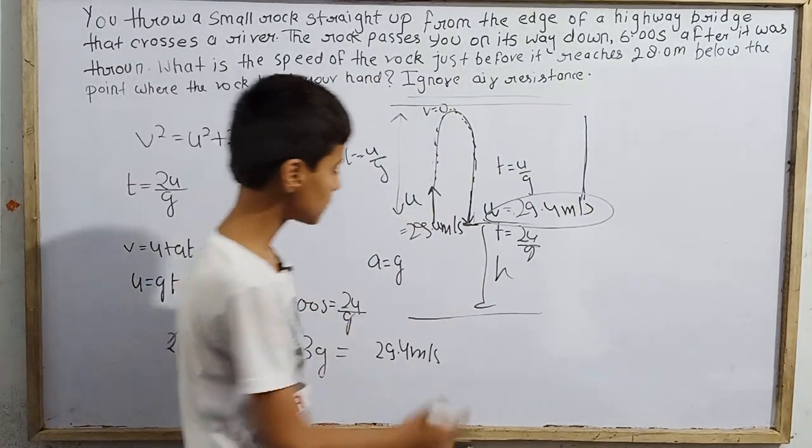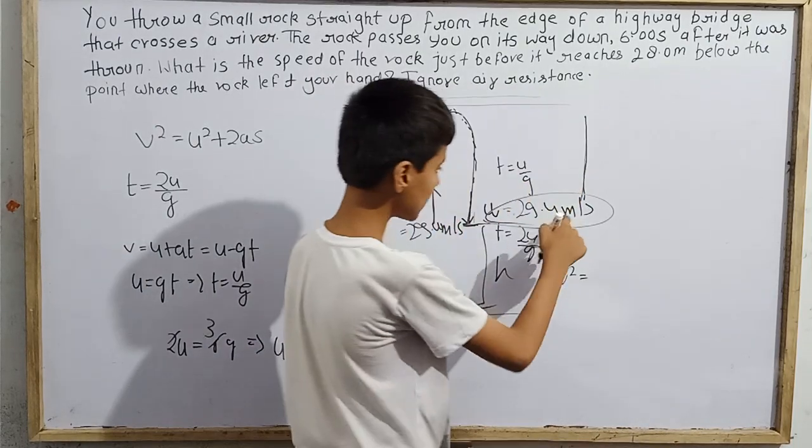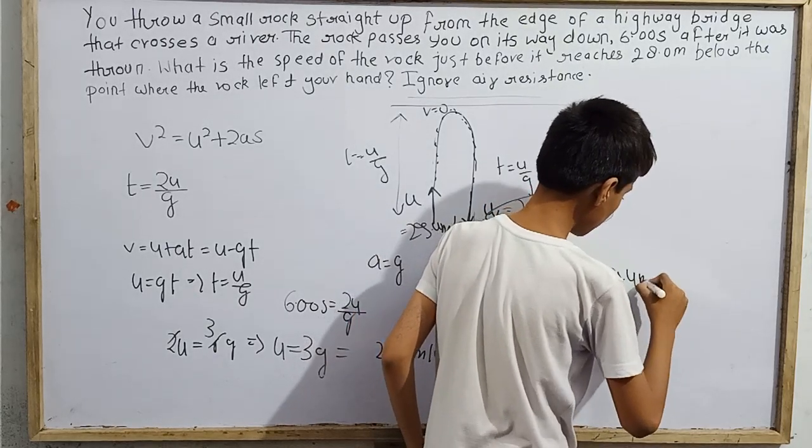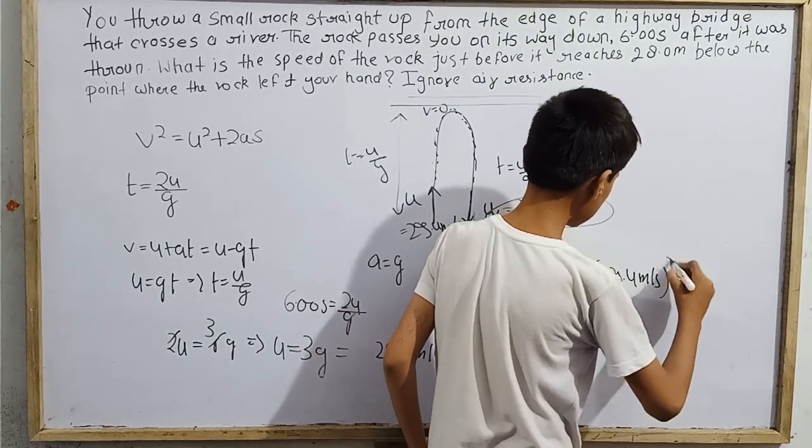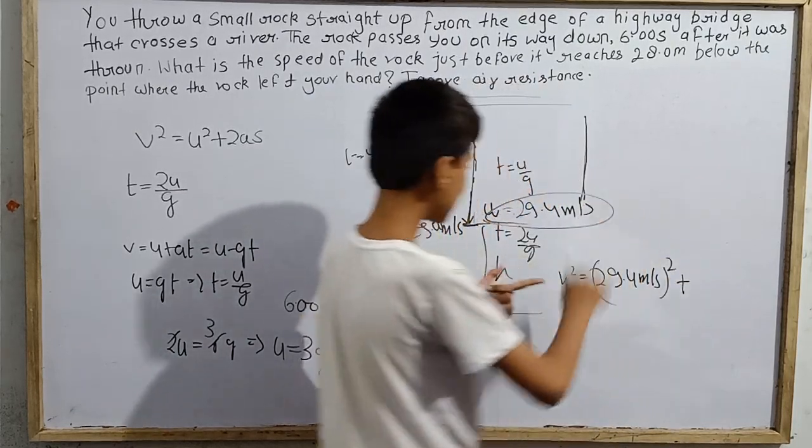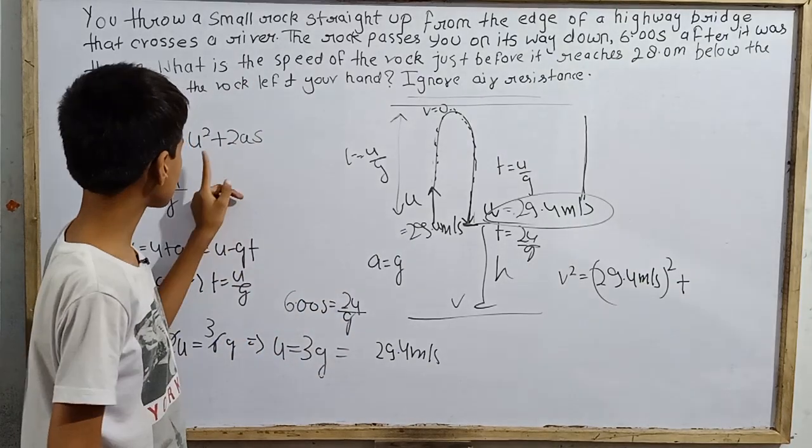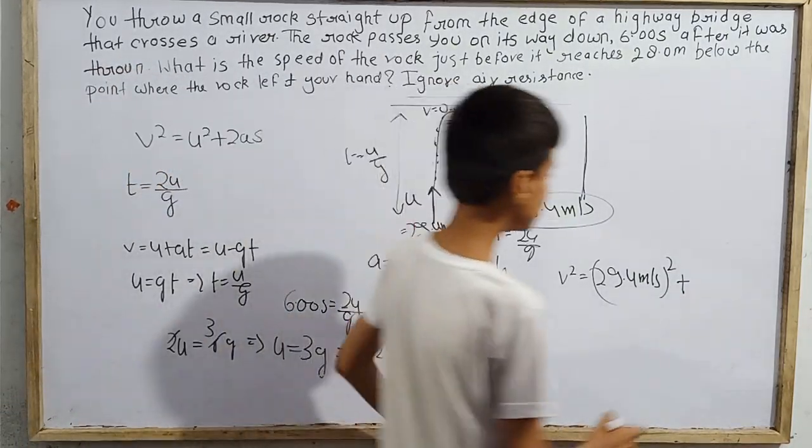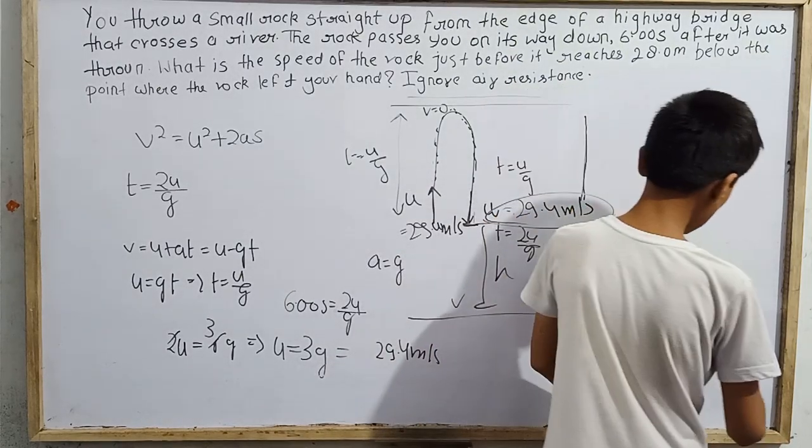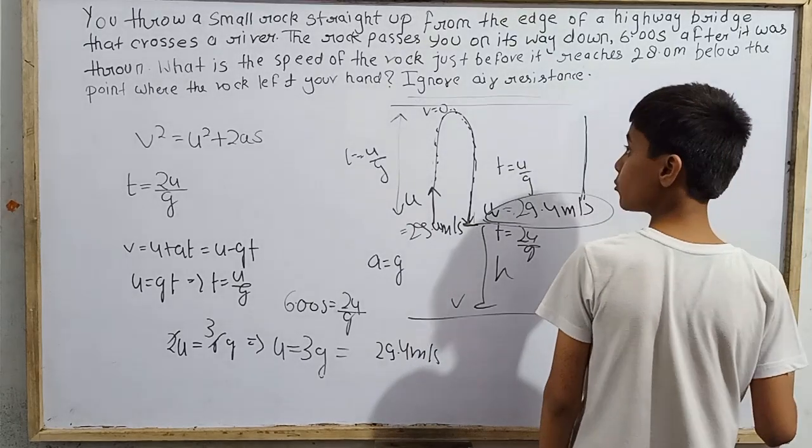Now the speed here will be the same speed but velocity differs. So U is 29.4 meters per second. Here we have the final speed when striking. Suppose V is striking speed. I will write V² = 29.4 squared.